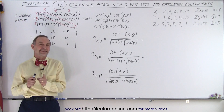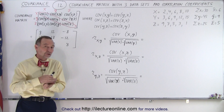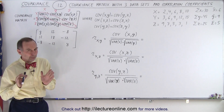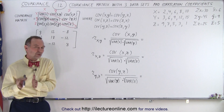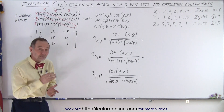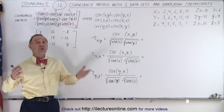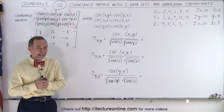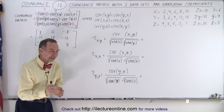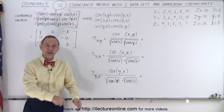Now we're going to calculate the correlation coefficients. For each covariance we should have an appropriate correlation coefficient. Remember that the correlation coefficients always will be between negative 1 and 1, never smaller than negative 1 and never larger than 1. A 1 and a negative 1 means there's perfect correlation between the data sets. Anything else is less than perfect correlation; if it's 0, that means one data set is completely random relative to the other.